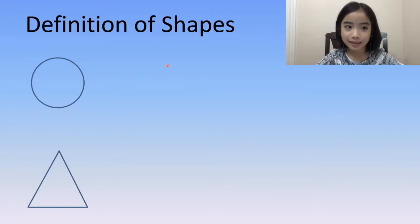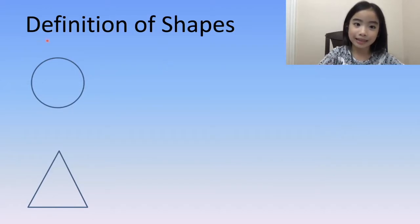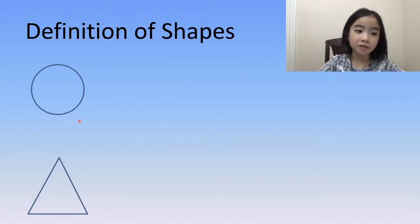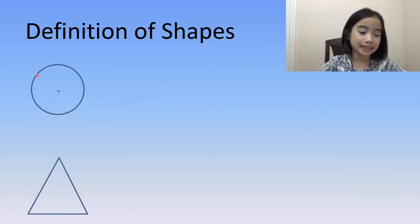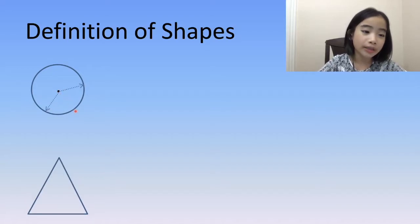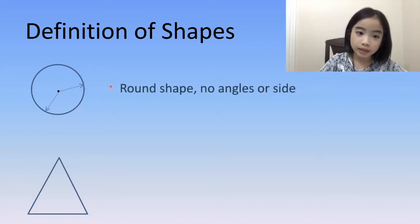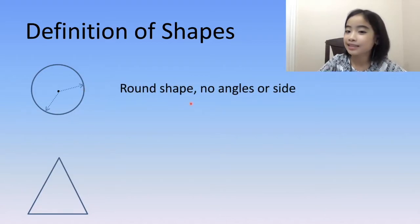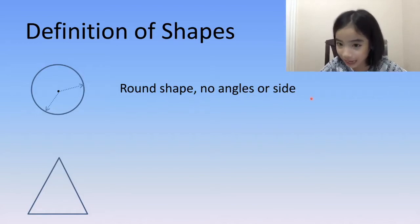Now, let's do the definition of shapes. First, let's start with a circle. The distance between the center point to any other point on the circle are equal. A circle is a round shape. It has no angles or sides.